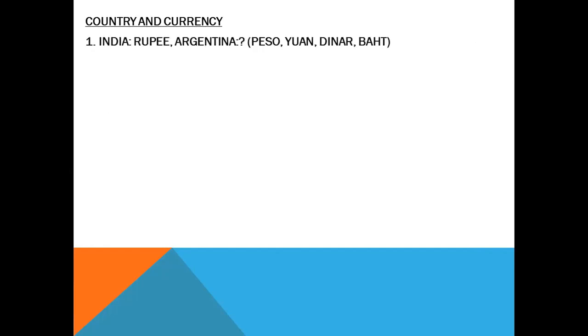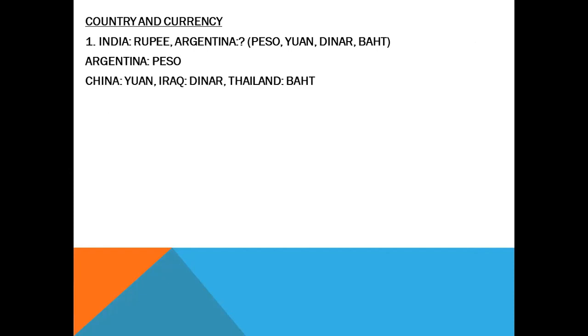The next category: country and its currency. India — Rupee. Argentina — what? Options: Peso, Yuan, Dinar, Baht. Peso is the currency of Argentina. Yuan is the currency of China. Dinar is the currency of Iraq. Baht is the currency of Thailand.